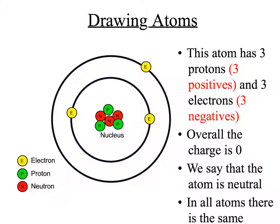Overall, the atom has zero charge. An atom is neutral. This atom, for example, has three protons, so three positive charges, and three electrons, so three negative charges. Overall, these charges balance out and the overall charge is zero. That makes the atom neutral. In all atoms, there's the same number of protons as there are electrons.